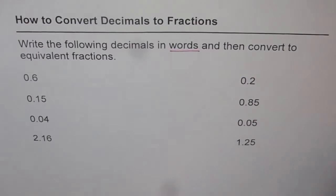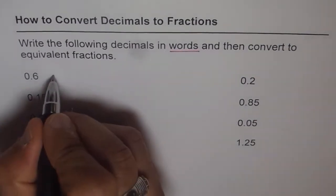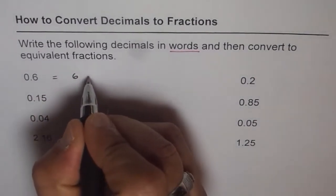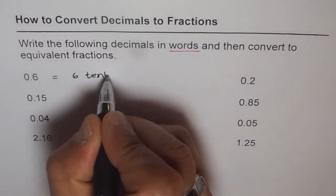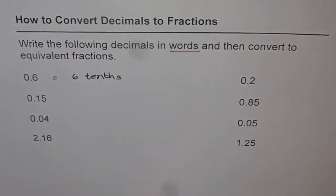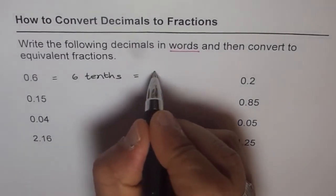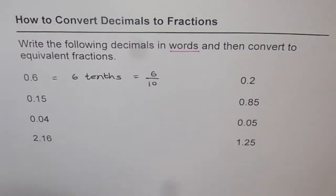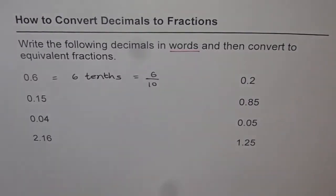So how do you write 0.6 in words? You can say 6 tenths. That means 6 out of 10. Do you understand? 6 out of 10 is 6 tenths.